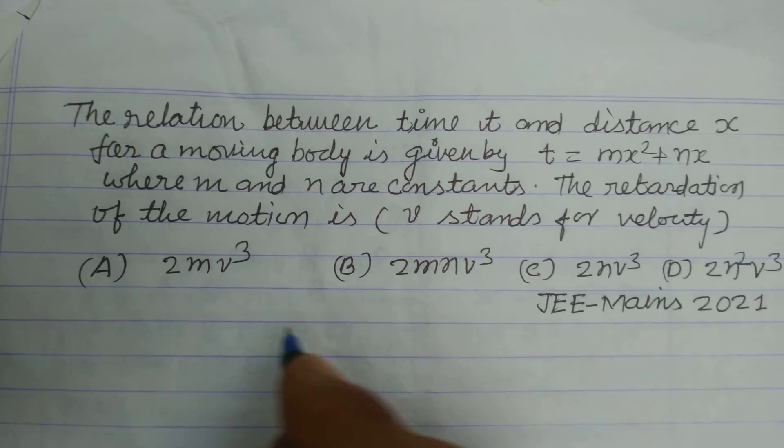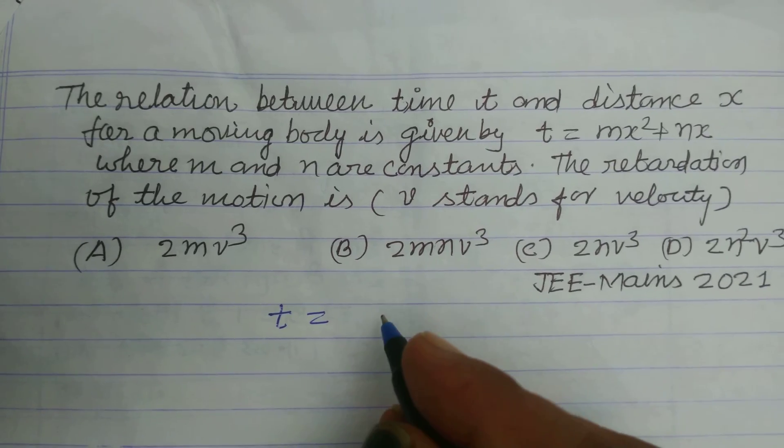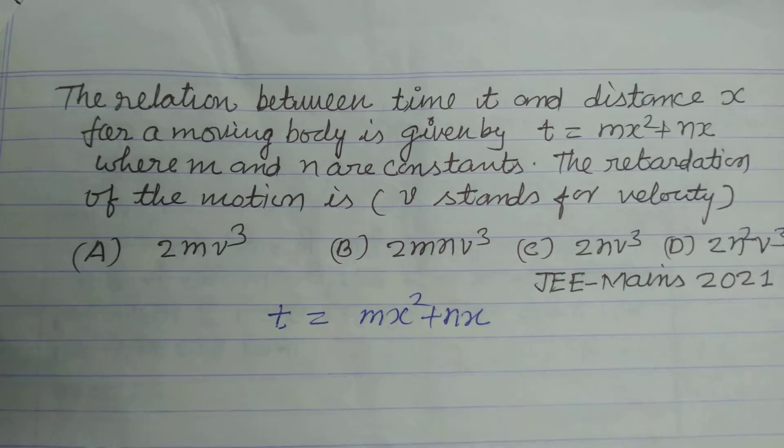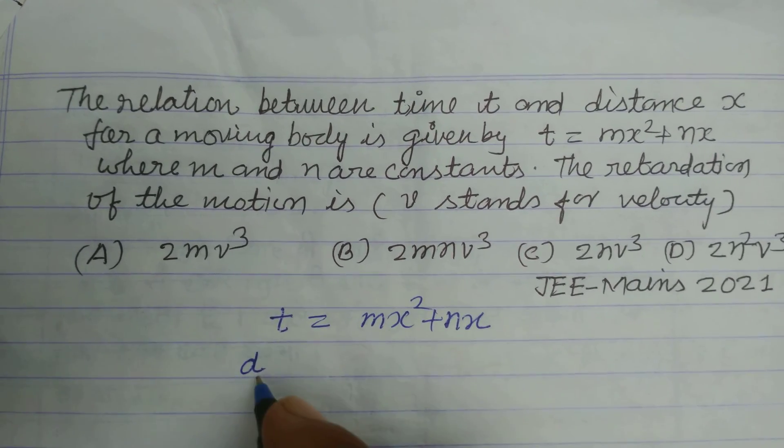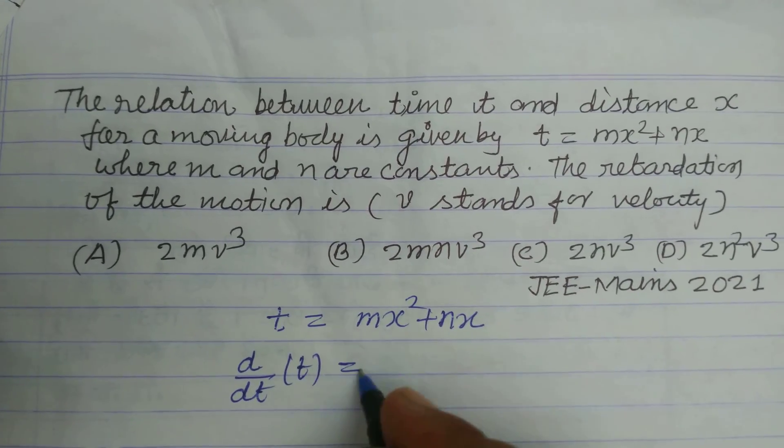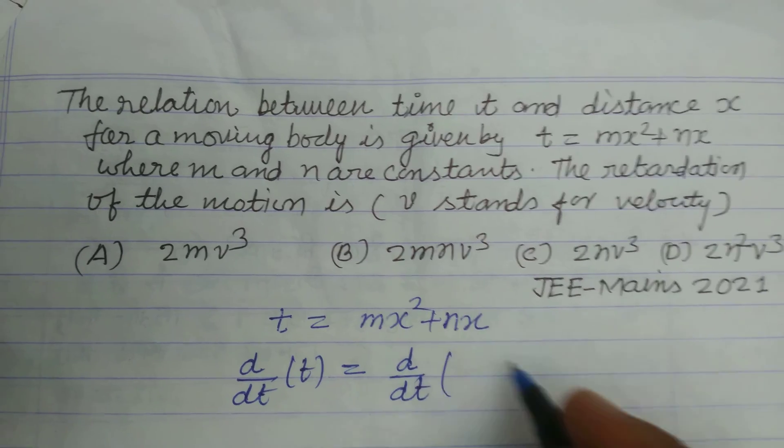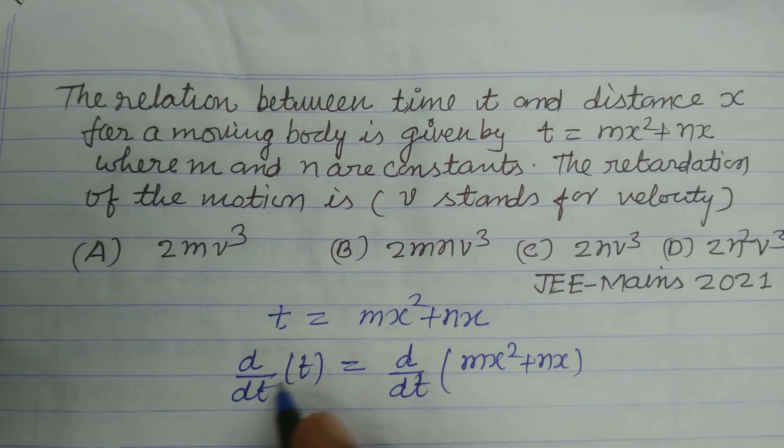So students, here t is given to us which is mx² + nx. We differentiate with respect to t: d/dt(t) = d/dt(mx² + nx). So d/dt of t...